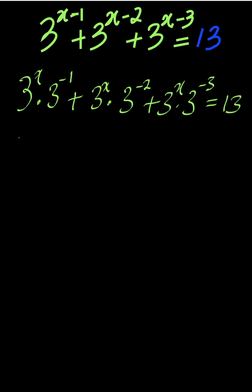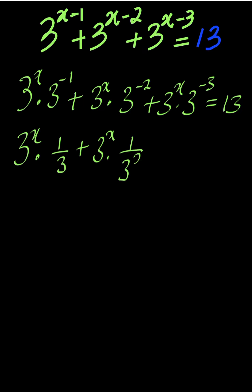So this is now 3 to the power of x multiplied by 1 over 3, plus 3 to the power of x multiplied by 1 over 3 squared, plus 3 to the power of x multiplied by 1 over 3 cubed, everything equal to 13.